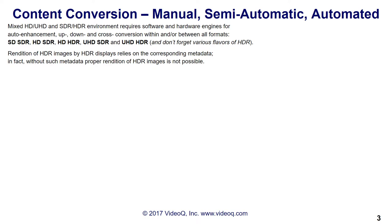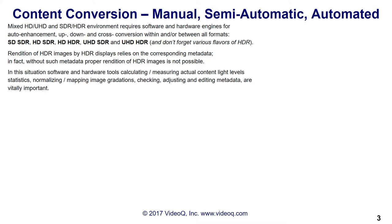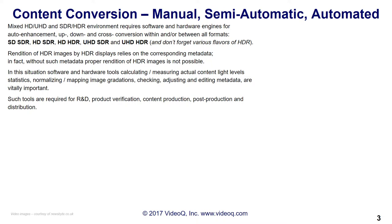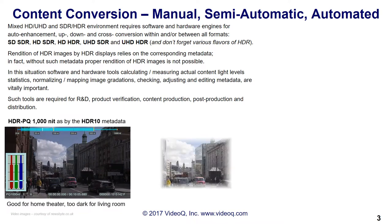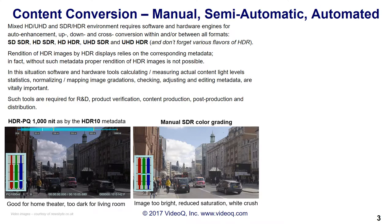This covers SDSDR, HDSDR, HDHDR, UHDSDR, and UHDHDR — and don't forget the various flavors of HDR. In this situation, with software and hardware tools calculating and measuring actual content light levels, statistics, normalizing and mapping image gradations, checking, adjusting, and editing — metadata is vitally important.